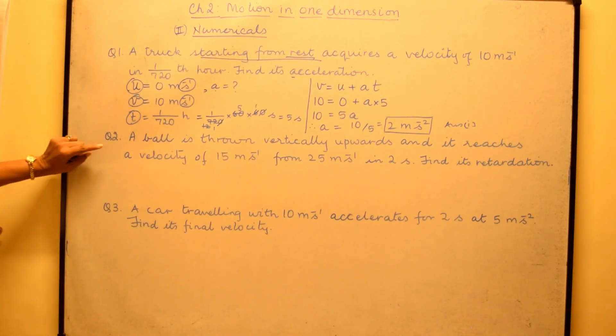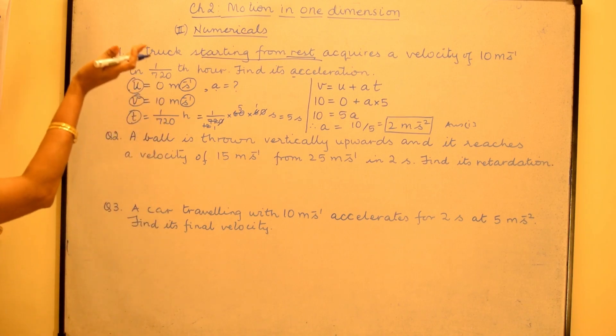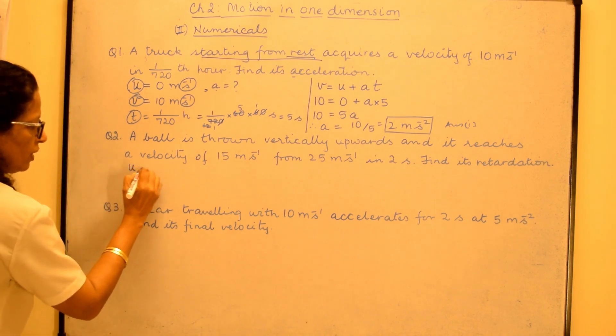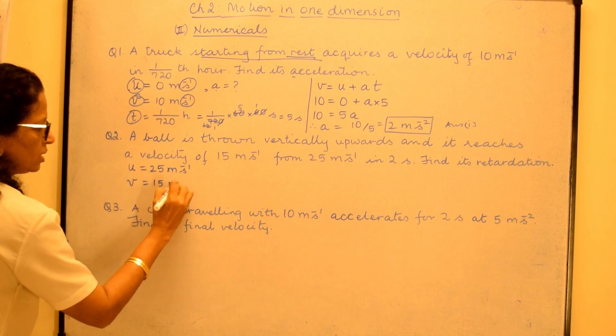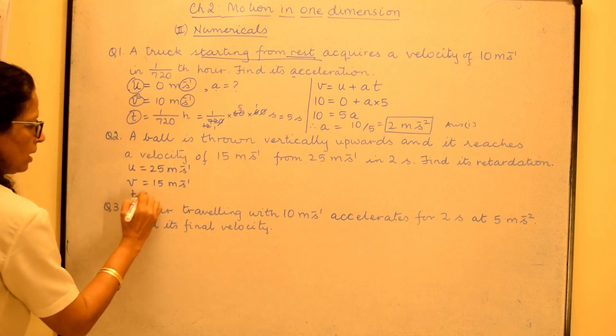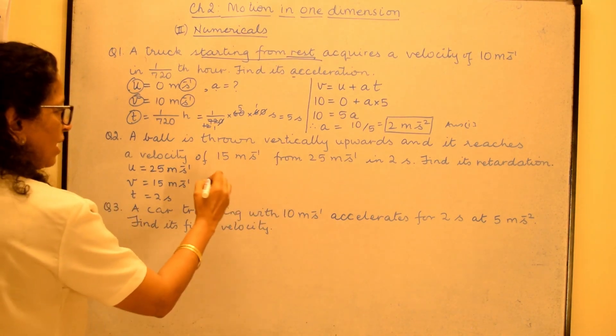Let us now look at our second question. Our second question says a ball is thrown vertically upwards and it reaches a velocity of 15 meter per second from 25 meter per second in 2 seconds. Find its retardation. When it is thrown up initial velocity is more. So from 25 it is going up to 15. So initial velocity that is u is 25 meter per second and the final velocity is 15 meter per second. And this is all happening in 2 seconds. And so they are asking you find the retardation.